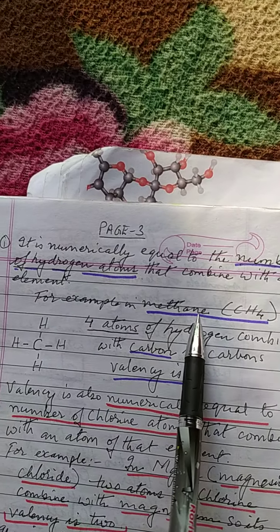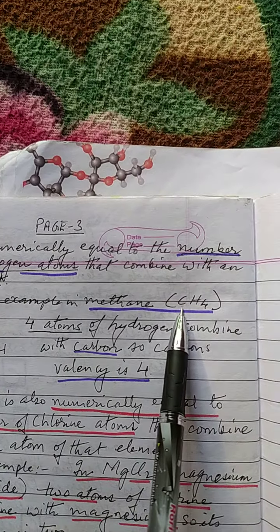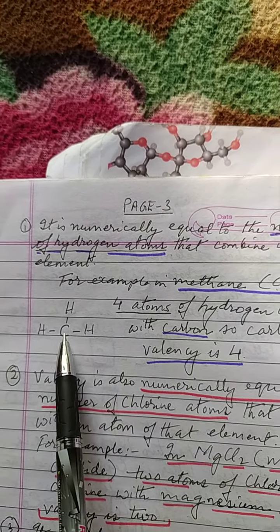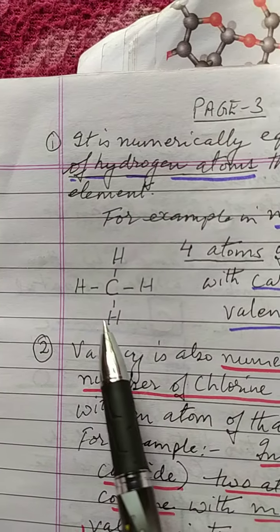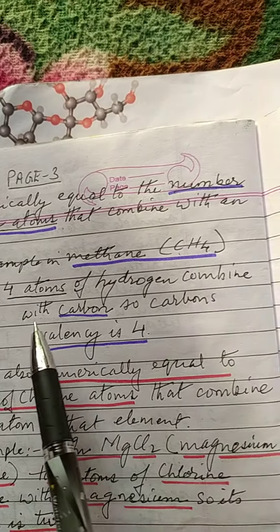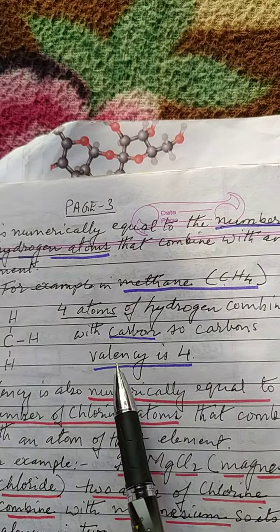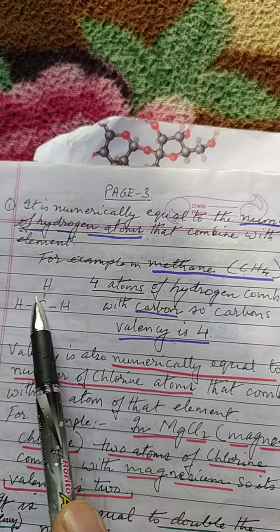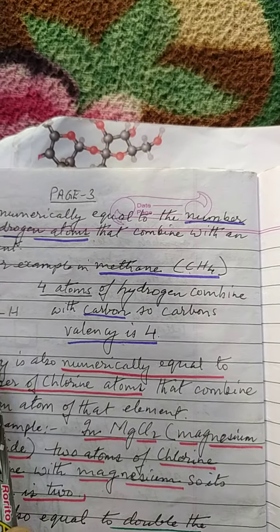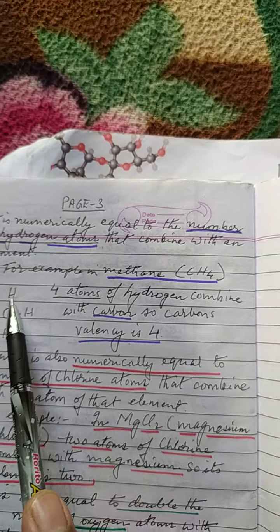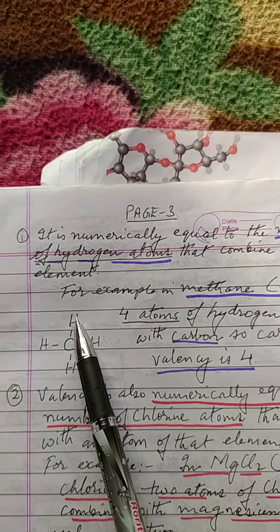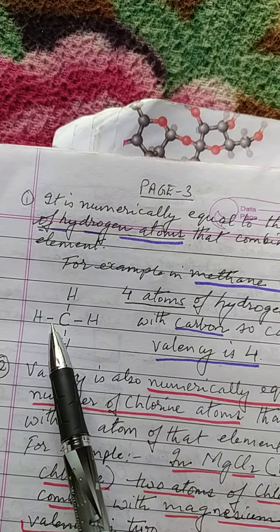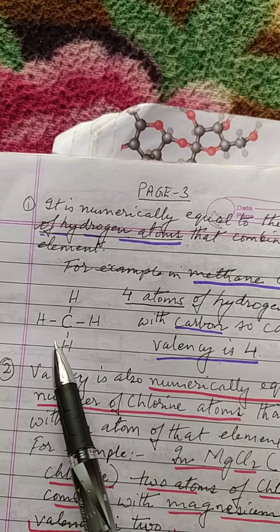For example, in methane we see carbon and four hydrogen atoms. Carbon combines with four hydrogen atoms. So the valency of carbon is four, because it combines with four atoms of hydrogen, and each hydrogen atom has one electron in its outermost shell.